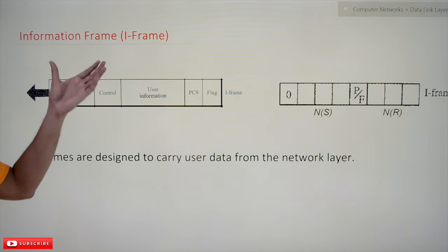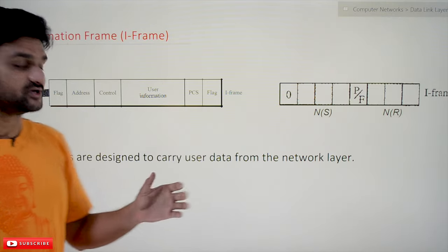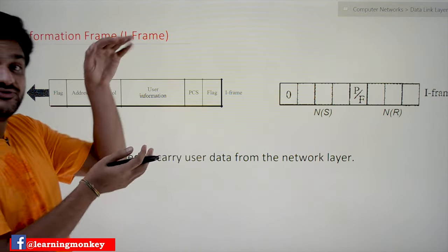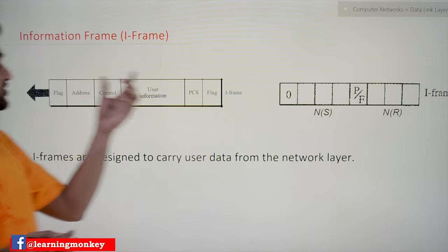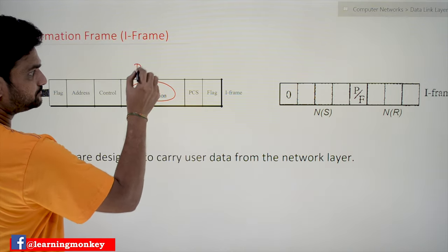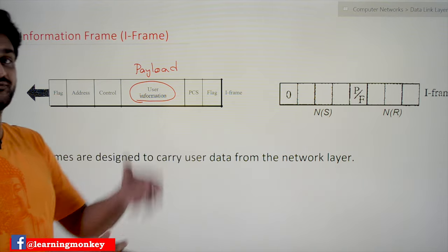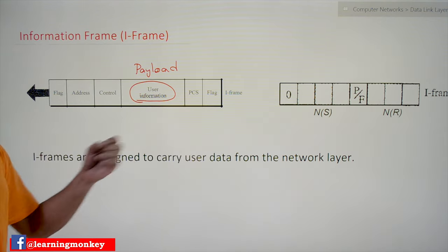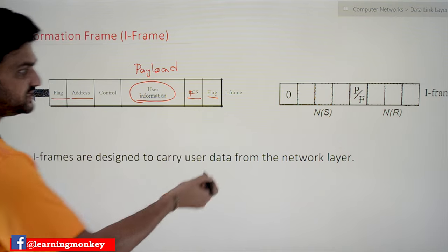This is the information frame. What is the job done by this information frame? I-frames are designed to carry user data from the network layer. The payload we receive from the network layer — if the data related to the sender needs to be transmitted, then we are going to use an I-frame. The data from the network layer embedded with the control fields of those specific layers is what we call the payload. The concepts related to flag, address, FCS, and flag have already been discussed in our previous video.